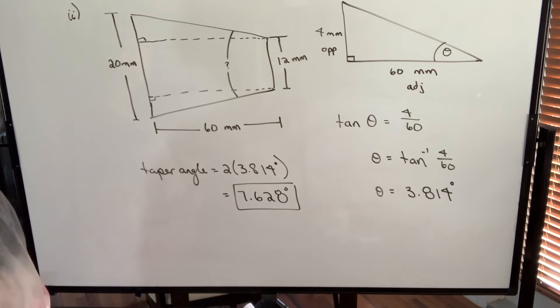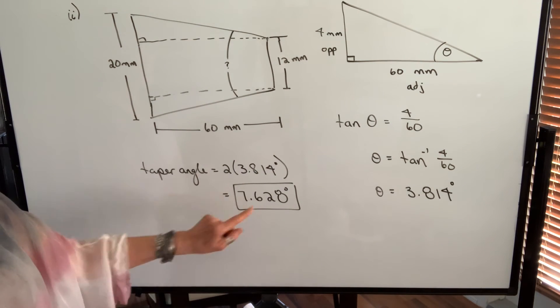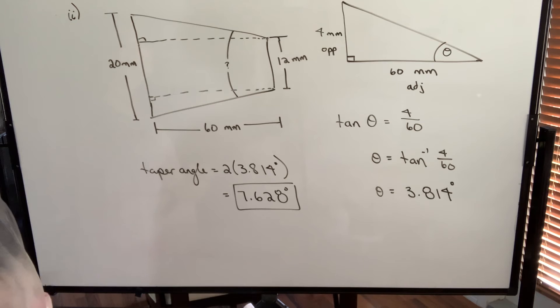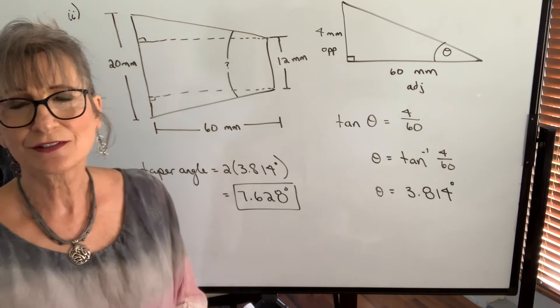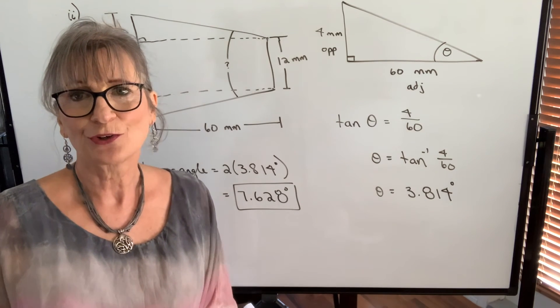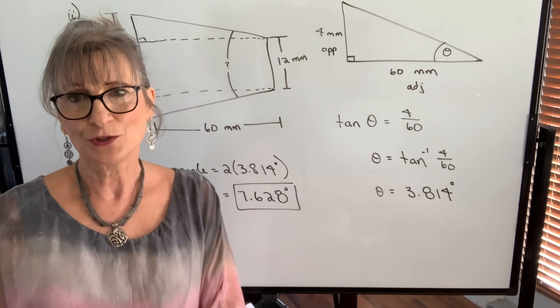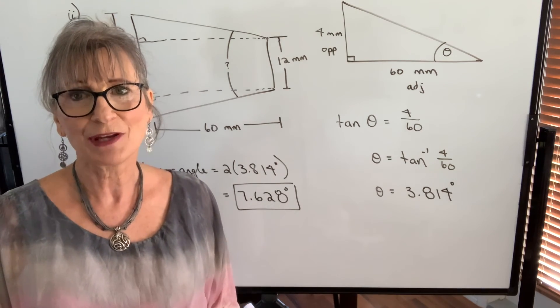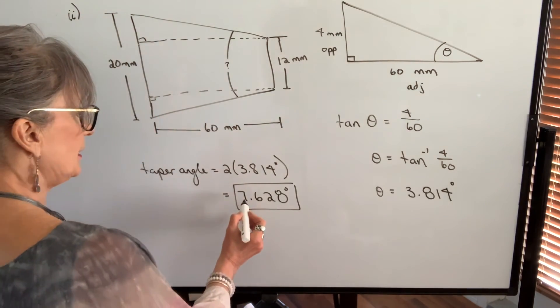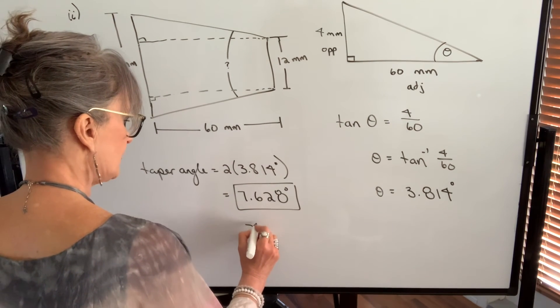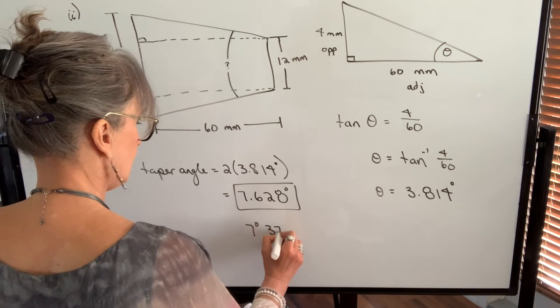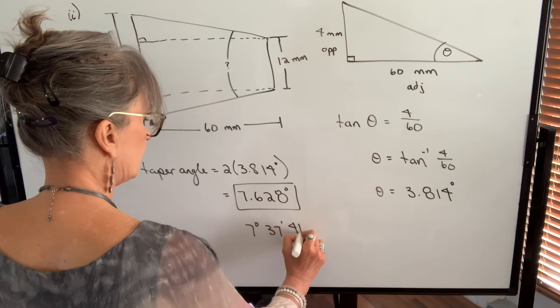You could leave your angle in decimal form or if you want to change it to degrees minutes seconds you figure out how to do that on your calculator or you watch a video that I did previously on how to do that manually. Either way you should get 7 degrees 37 minutes 41 seconds.